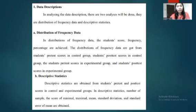Descriptive statistics are obtained from students' pretest and posttest scores in control and experimental groups. In descriptive statistics, number of sample, the score of minimal, maximal, mean, standard deviation, and standard error of mean are obtained.